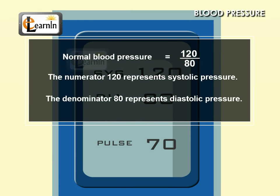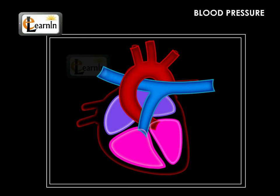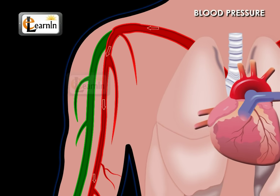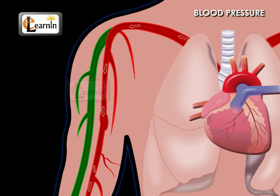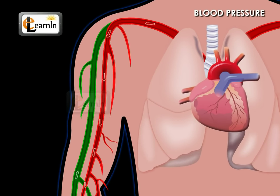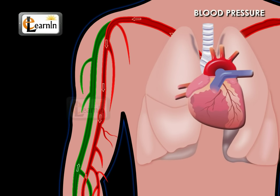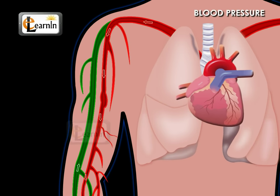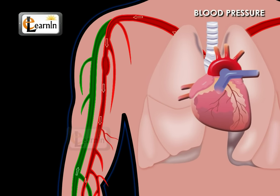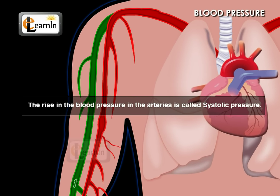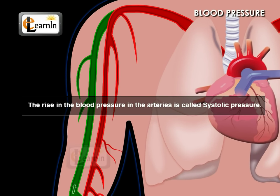During systole, when the ventricles contract, the blood is pumped into the arteries. So the blood pressure in the arteries increases immediately after the systole. This rise in blood pressure in the arteries is called the systolic pressure.